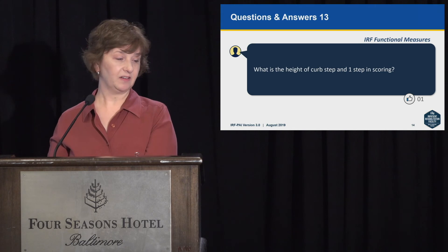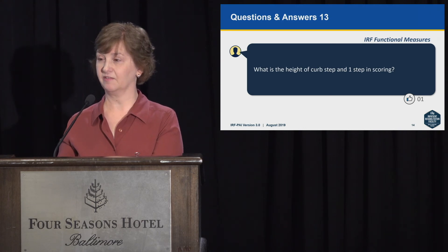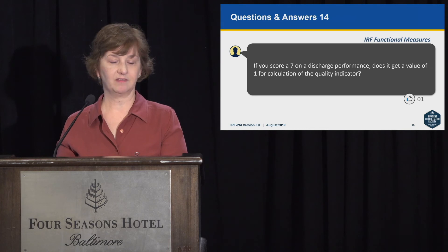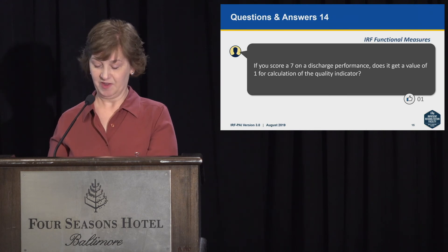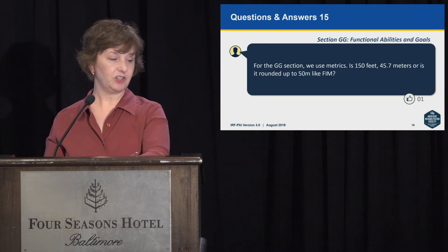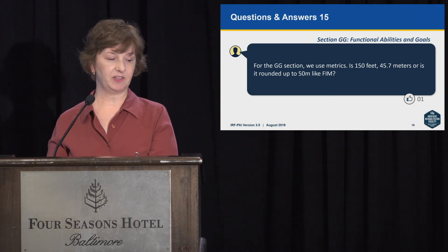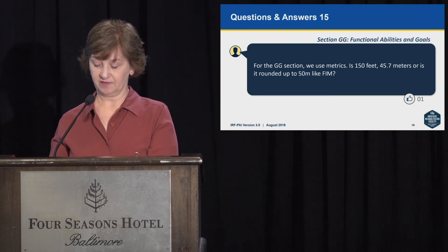What is the height of the curb step and one step in scoring? There are no specifications for the exact height of steps for activities involving steps. If you score a 07 on discharge performance (patient refused code), does it get a value of 1 for calculation of the quality indicator? Yes, a code of 07 at discharge is recoded to 01 for the quality measure calculation. For the GG section using metrics: is 150 feet 45.7 meters or rounded up to 50 meters like FIM? You would assess the patient's ability to walk at least 45.7 meters.